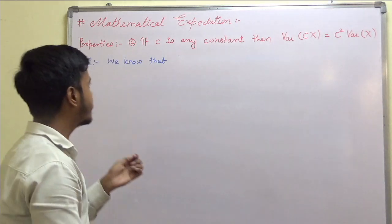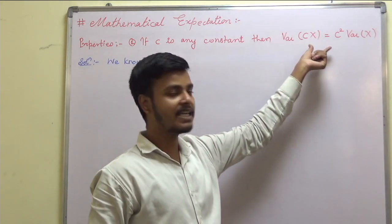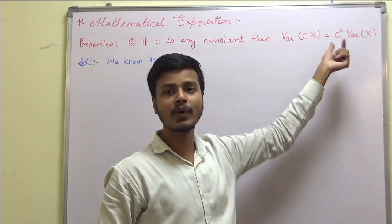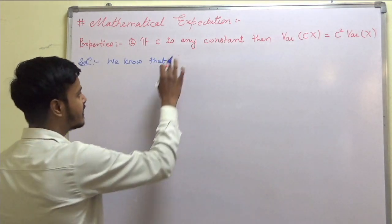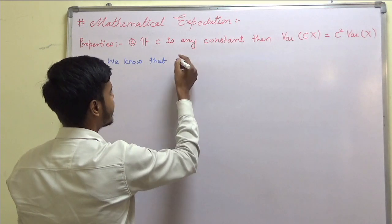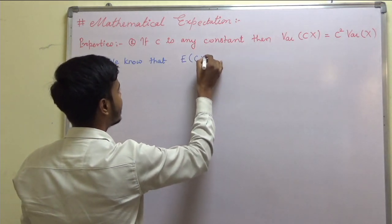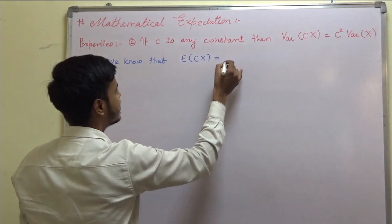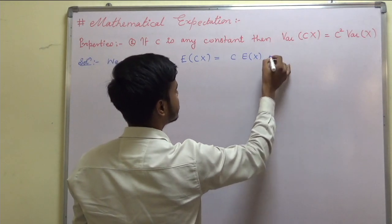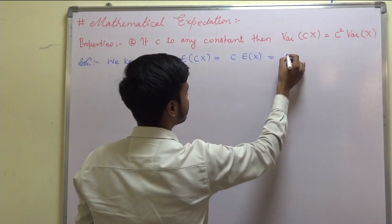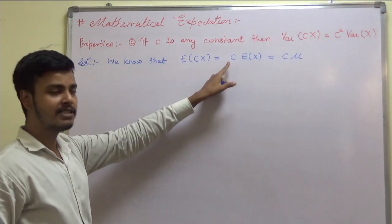The first property says: if c is any constant, then we have to prove variance of cX is c squared times variance of X. Let us recollect first of all the property of expectation. We know that expectation of cX is nothing but c times expectation of X, and what is expectation of X? We denote it by mu.